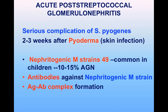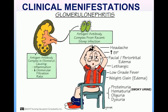Acute post-streptococcal glomerulonephritis is a serious complication seen two to three weeks after Strep pyogenes skin infections. It is the nephritogenic M strains that are mostly involved, most commonly M49. Ten to fifteen percent of children with these skin infections can develop acute glomerulonephritis. Antibodies form against the nephritogenic M strains, creating antigen-antibody complexes that settle on the glomerular membrane, causing marked inflammation by activating the complement system and decreasing glomerular filtration rate.